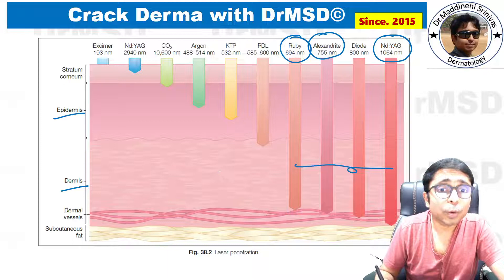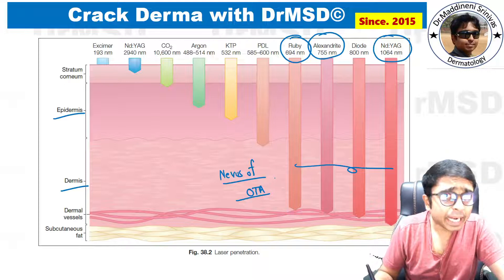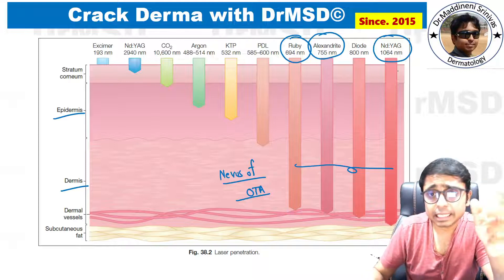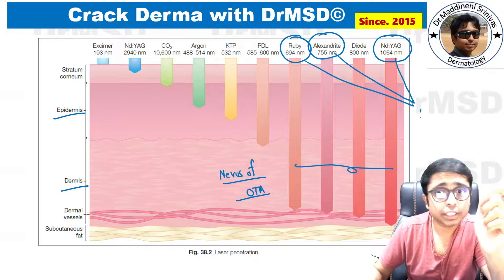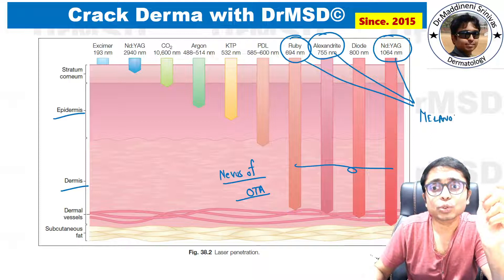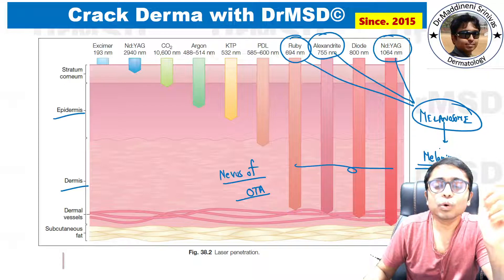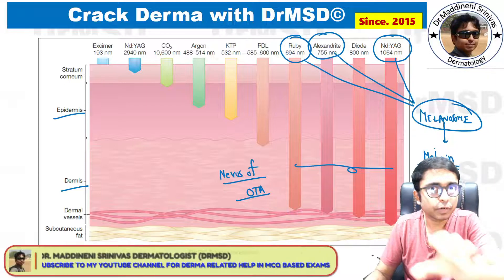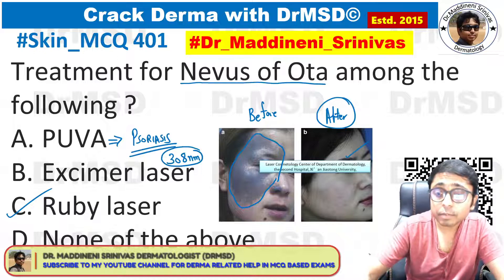I hope you all remember that in Nevus of Ota, the melanocytes will be present in the dermis. These lasers are all going to focus and damage one structure in the skin — the melanosome. The melanosome is the organelle present in melanocytes that produces melanin. With this, the pigmentation the patient has will get normalized after treatment with these lasers.